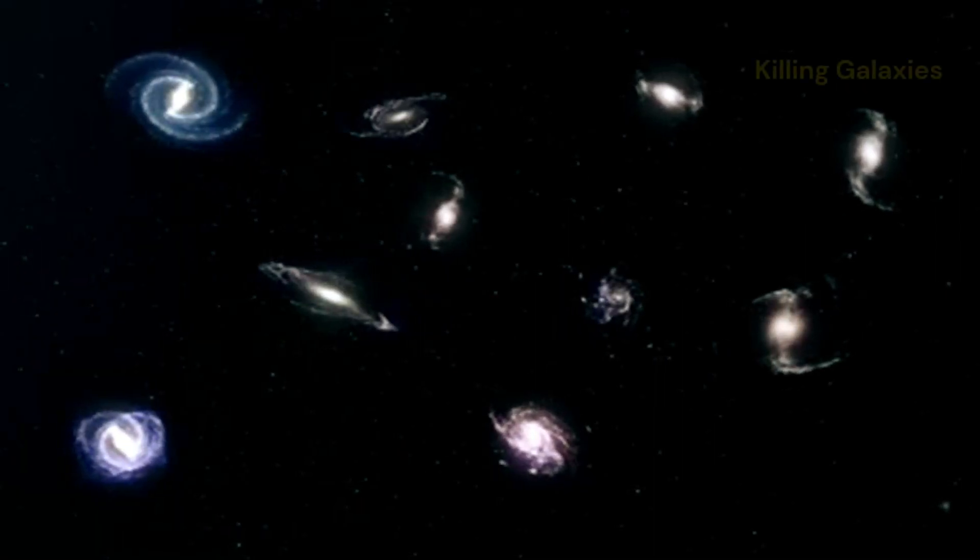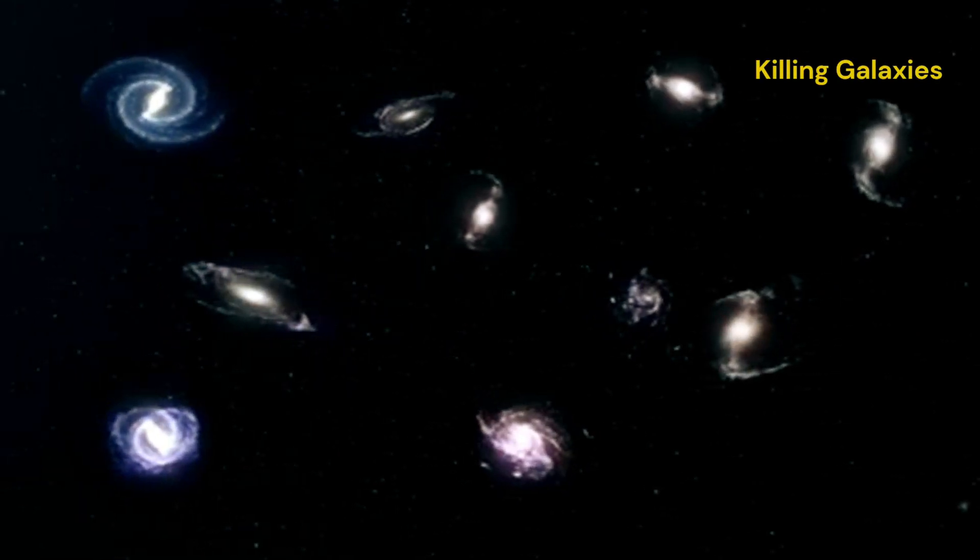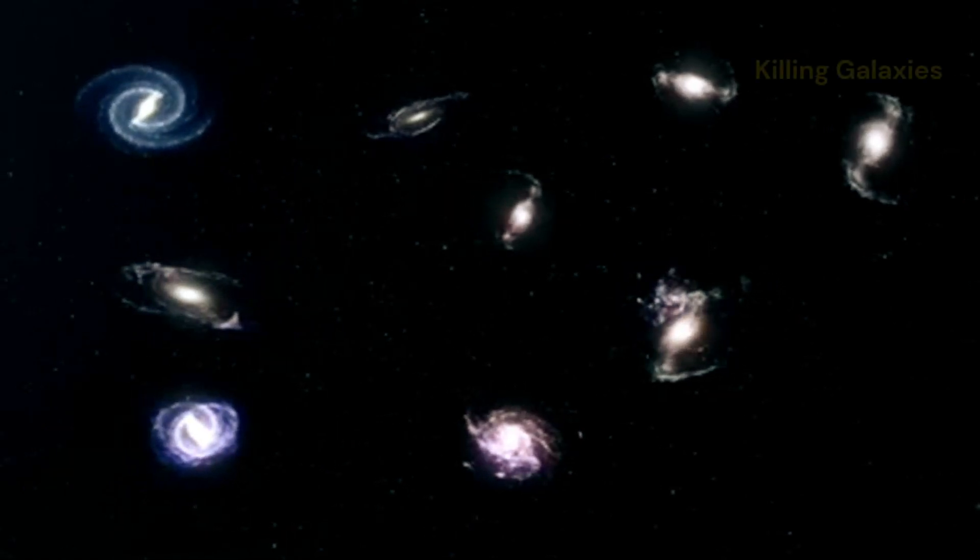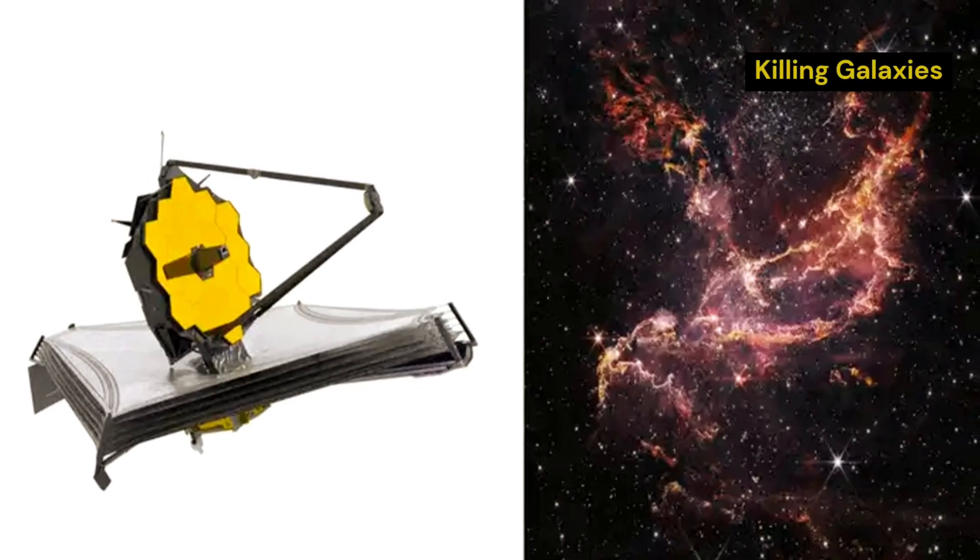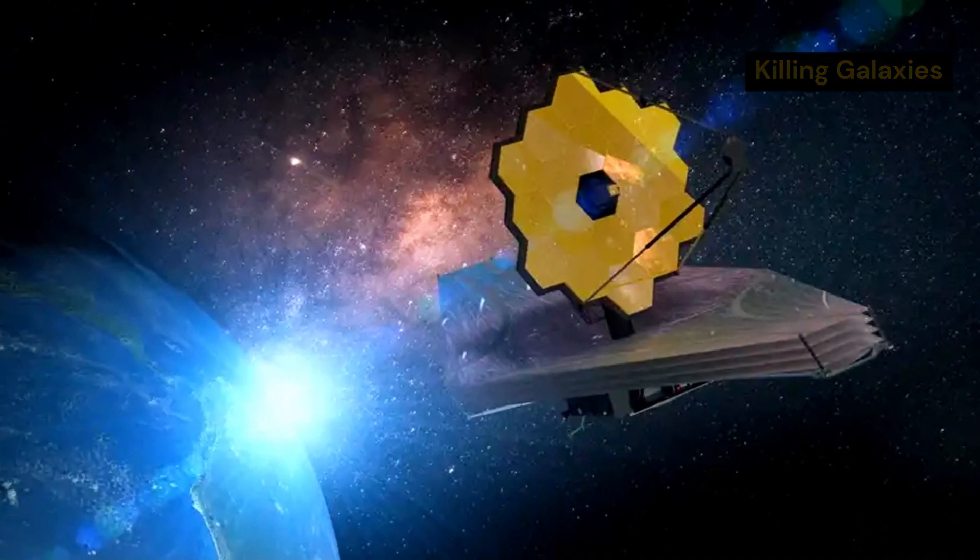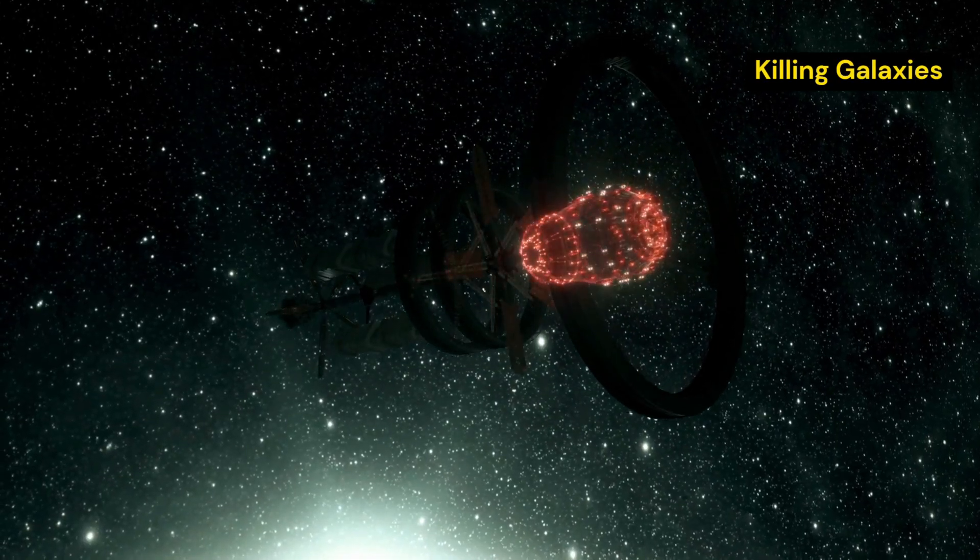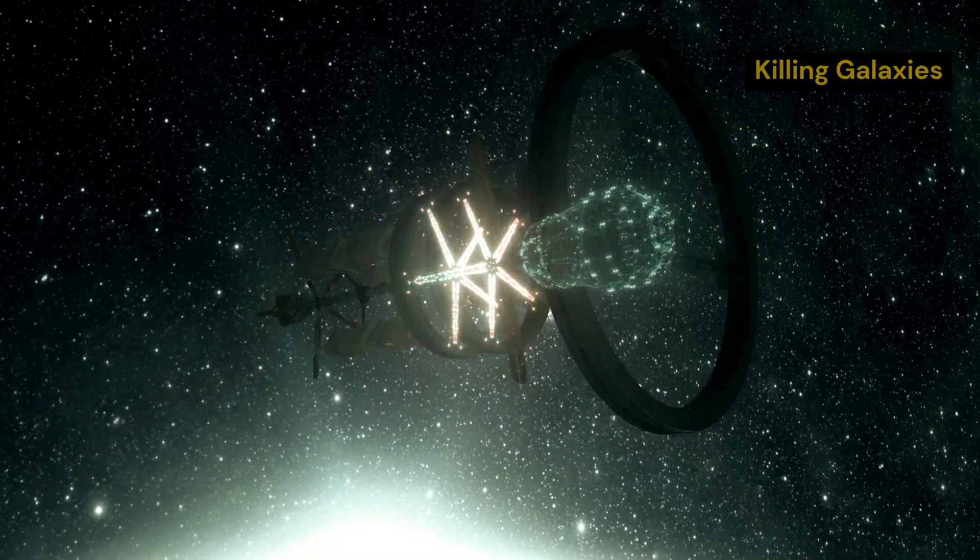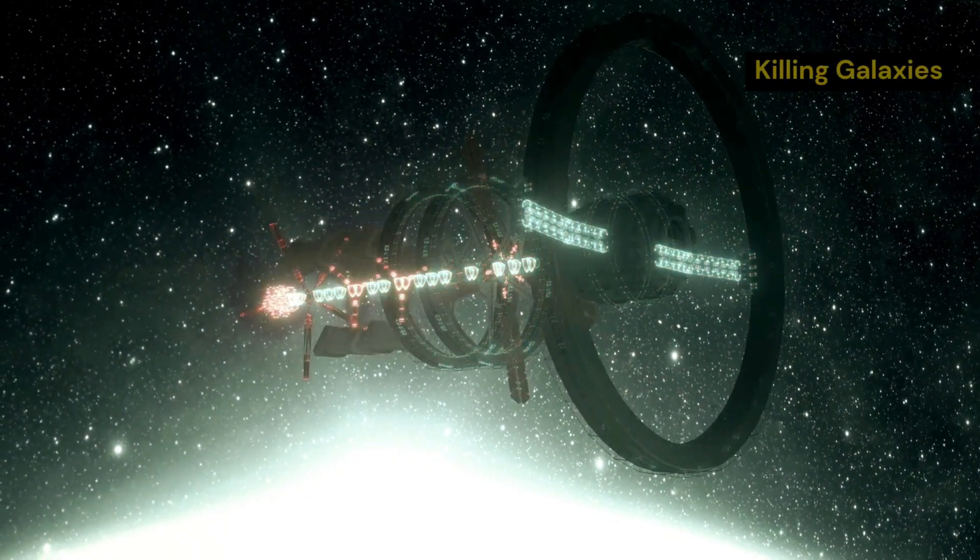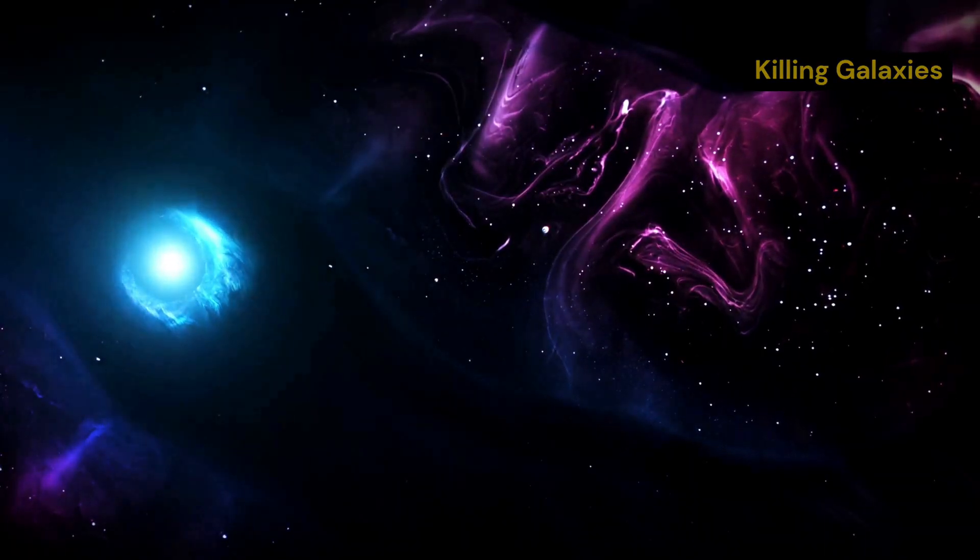The fact that J1721 plus 2115 is so distant means that we are seeing it as it was when the universe was very young. This gives us a unique window into the early stages of galaxy formation and evolution. By studying objects like J1721 plus 2115, we can learn about the conditions that prevailed in the early universe and how the first galaxies formed.